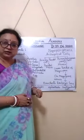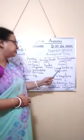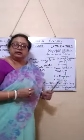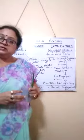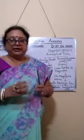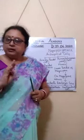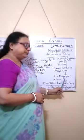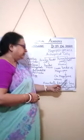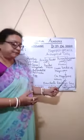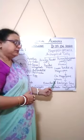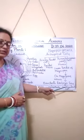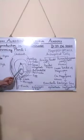After meiosis cell division, that is the reduction division, it gives the linear tetrad of the megaspores. That means four megaspores are present. But out of these spores, three degenerate and only one megaspore remains active. This active megaspore divides by mitosis cell division and gives the eight-nucleate embryo sac. This is the embryo sac.